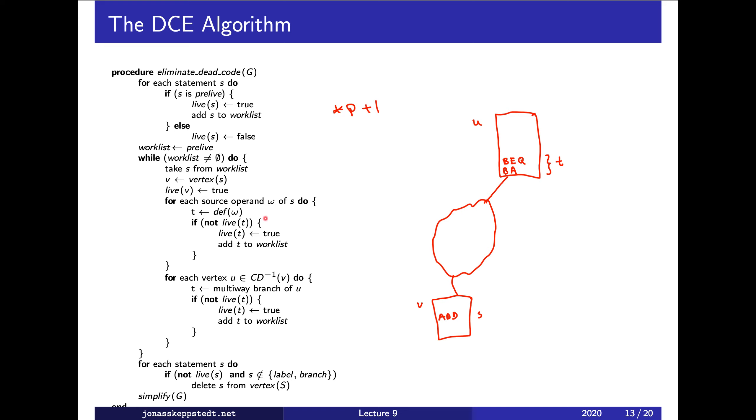We continue until the worklist is empty. What we can do then is remove all statements which are not live, but we keep labels and branches even if they're not live, and we simplify the control flow graph using this simplified algorithm.